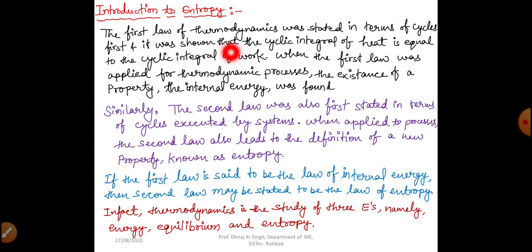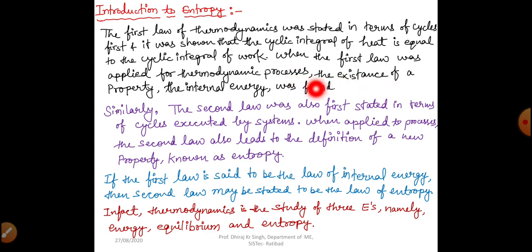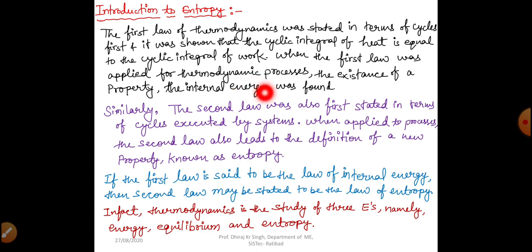The first law of thermodynamics was stated in terms of cycles first, and it was shown that the cyclic integral of heat is equal to the cyclic integral of work. When the first law was applied for thermodynamic processes, the existence of a property — internal energy — was found. For a cycle: summation δq = summation δw, and for a process: δq = du + δw.